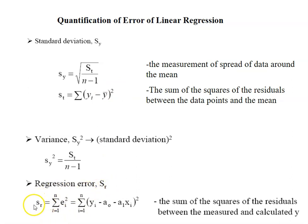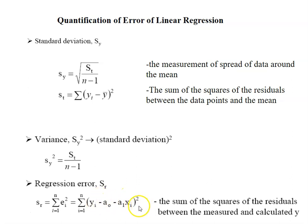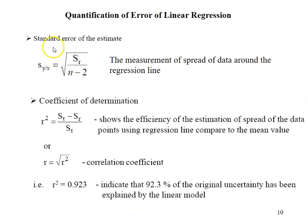For the regression error, represented by sr, it equals the sum of the squares of the residuals between the measured and the calculated y. The residual e is just the discrepancy between the true value of y and the approximate value predicted by the linear regression line — that is, a-naught plus a1·x. It's simply the difference between the y predicted by the linear line and the real data value.